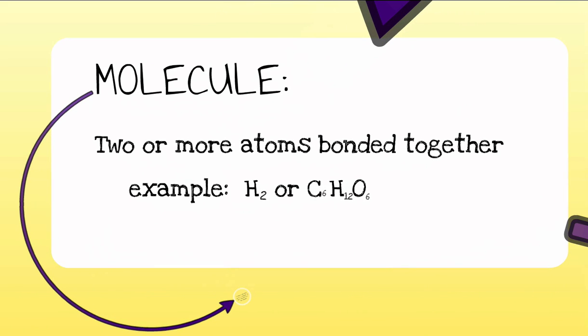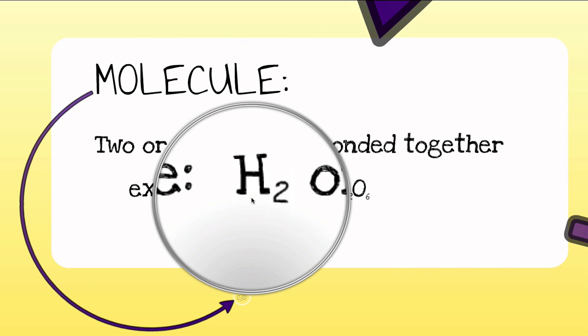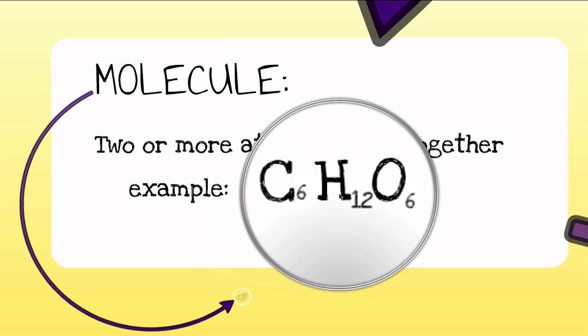First of all, some definitions. What exactly is a molecule? A molecule is two or more atoms bonded together. We've got two examples here, each more than one atom. Let's zoom in on hydrogen, which is two hydrogen atoms making one hydrogen molecule. Or glucose — this is six carbons, twelve hydrogens, and six oxygen atoms. They're all bonded together and they make a molecule of glucose.